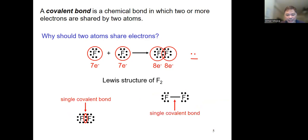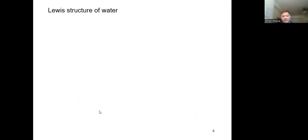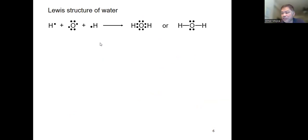In the Lewis structure of F₂, the two shared electrons form a single bond shown as a single line, and the electrons that are not shared are called lone pairs or non-bonding pairs. For water (H₂O), made up of one oxygen atom and two hydrogen atoms, the oxygen forms a single bond with each hydrogen, giving you the Lewis structure of water.